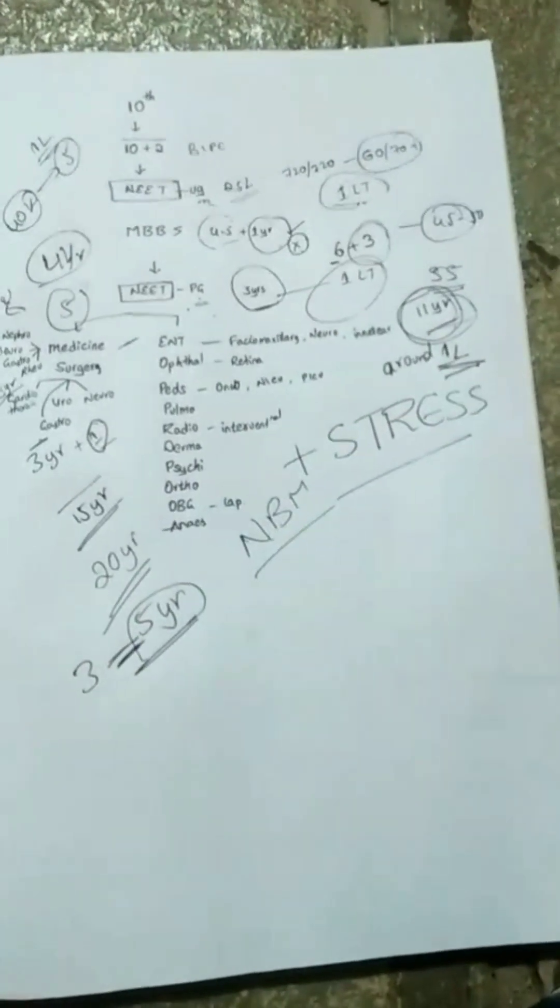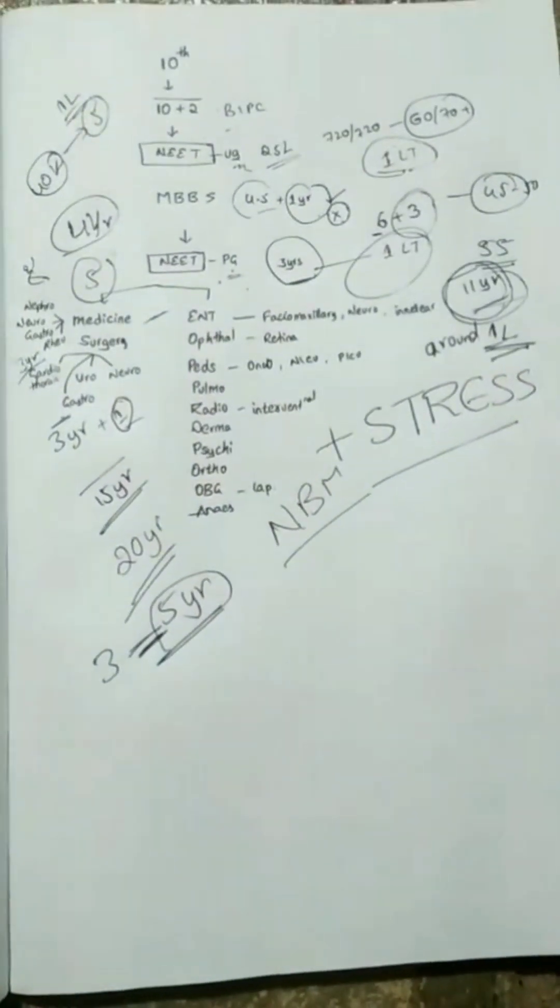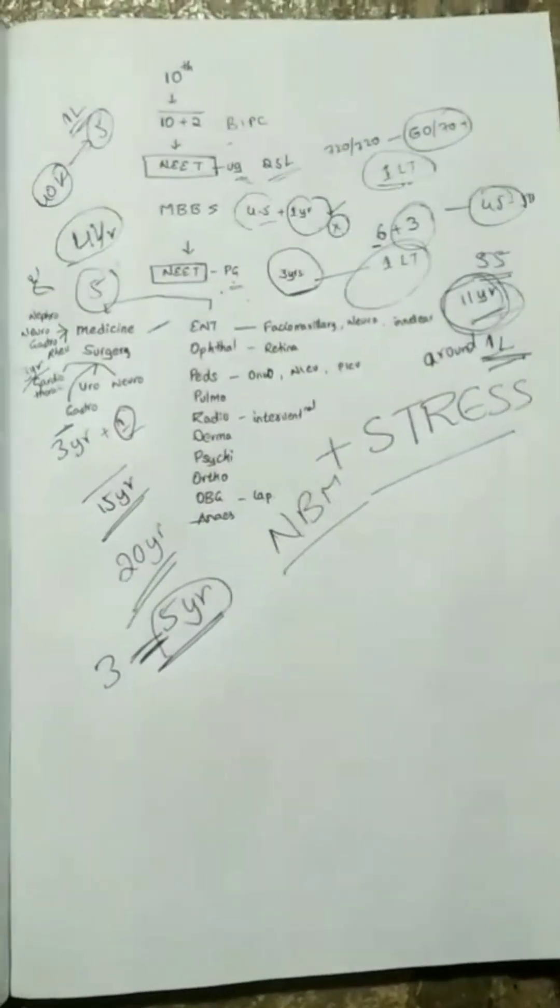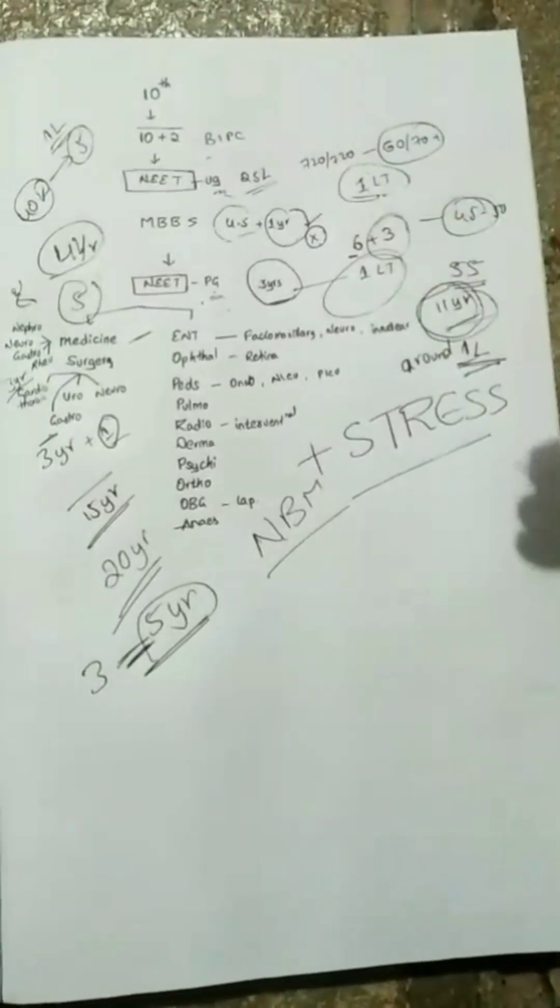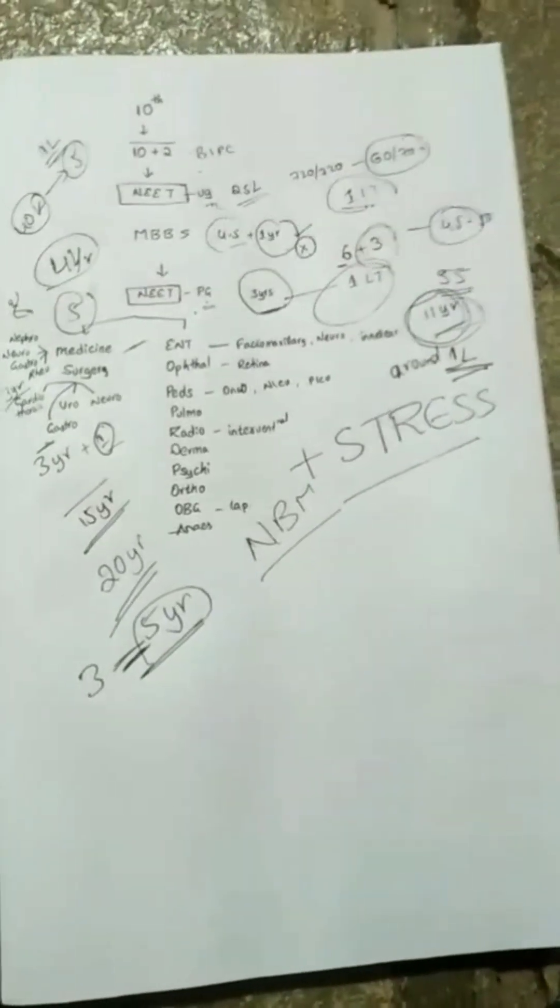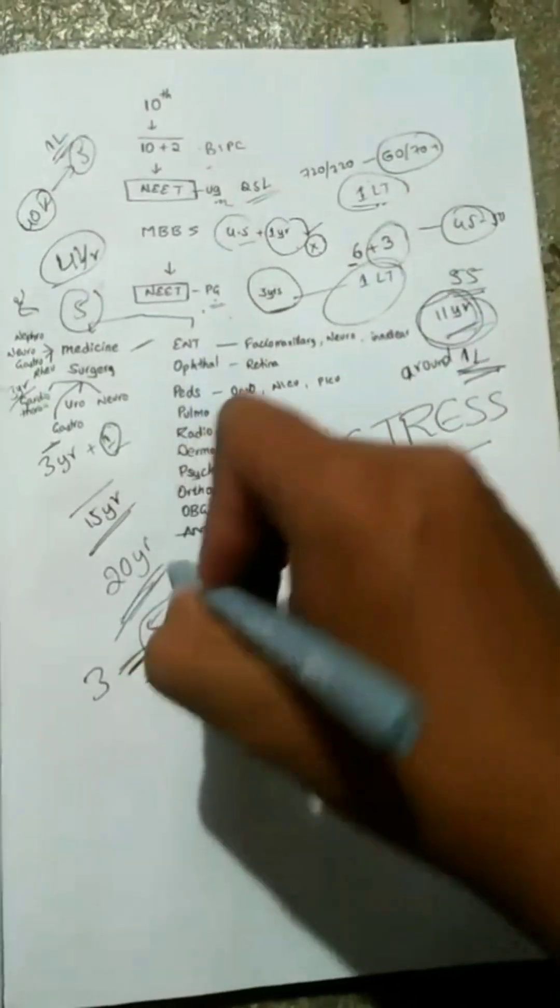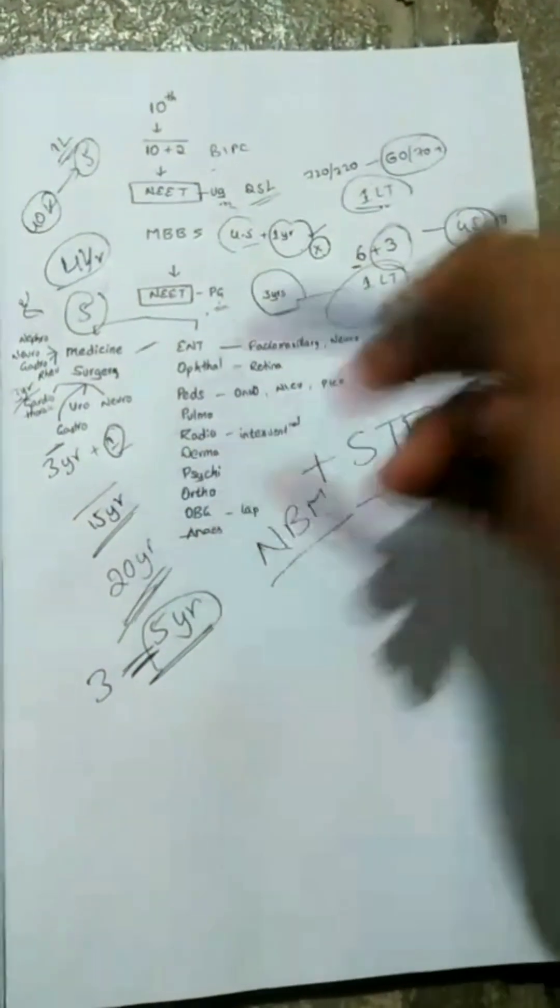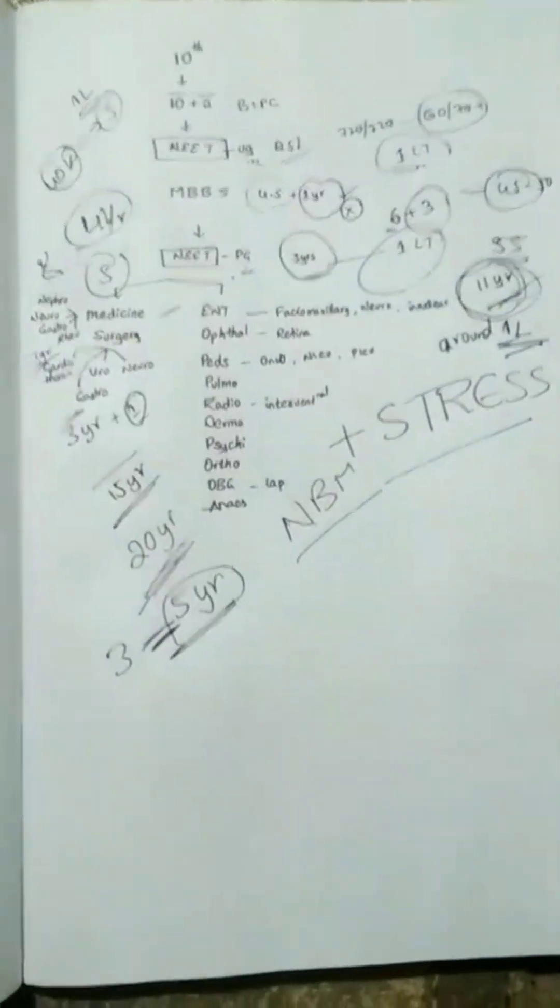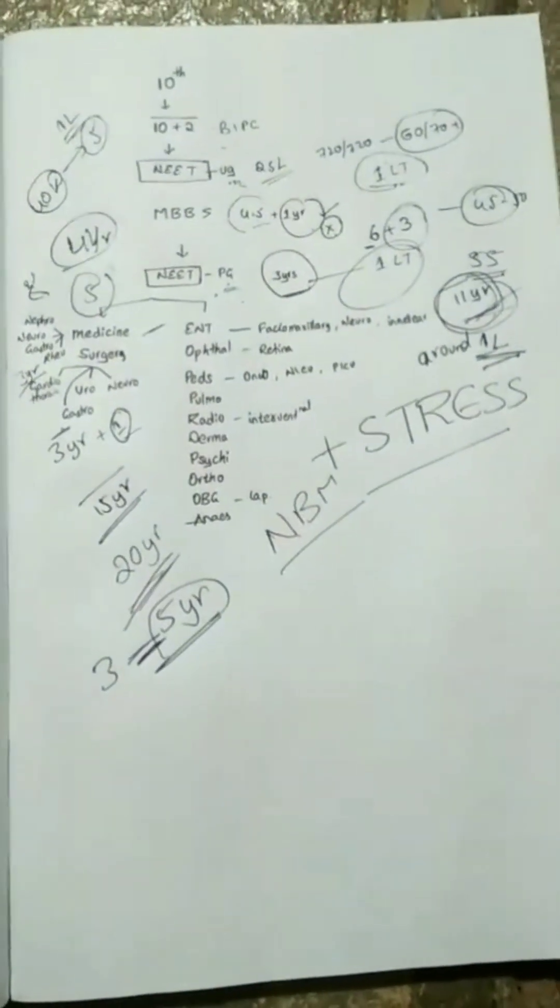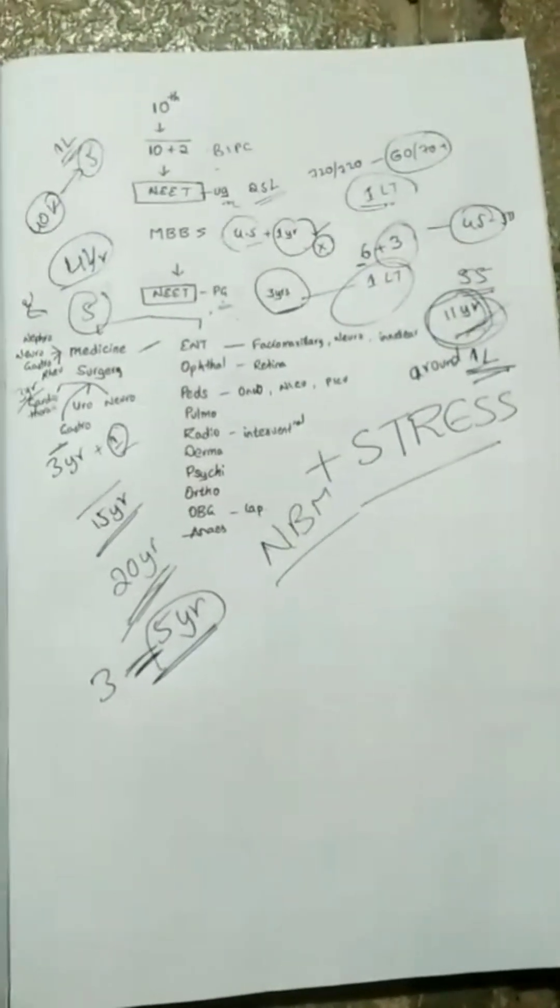This many years it takes to get settled for a doctor. Even if you start as a content creator, you will be in a greater position within 5 years, believe me, or 10 years. Not 20 years. 20 years is too much. 15 years is also too much. Better don't become a doctor. Don't choose to become a doctor.